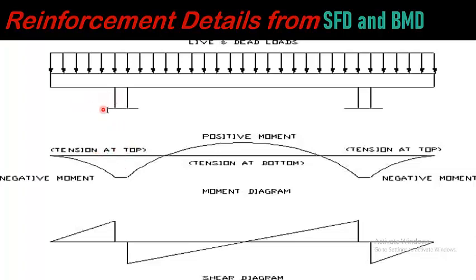In the overhanging portion, the top portion of the beam experiences tension, whereas the bottom portion experiences compression — here is the negative moment. As we go towards the center of the beam, there is a positive moment which is the maximum bending moment. In the overhanging portion again, the top fibers experience tension, and here is the negative moment. If we see the shear force diagram, the shear force is maximum near the support of the beam — this is the positive maximum shear — and maximum negative shear near the other support, becoming zero at the center of the beam, where the bending moment is maximum.